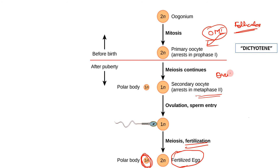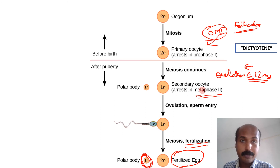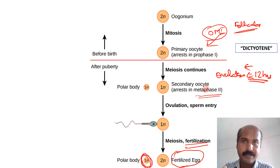The secondary oocyte stage is reached only around the time of ovulation — about 12 hours before ovulation, the first meiotic arrest is released. The second meiotic arrest, which occurs at metaphase two, is released only at the time of fertilization. So the first meiotic arrest occurs before birth and is released at ovulation; the second meiotic arrest occurs at ovulation and is released only upon fertilization.